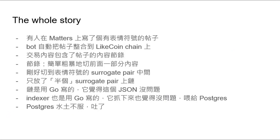所以Postgres就說這個不是一個合法的JSON。整個故事是這樣的：首先有人在Metas上面寫了個帖子，有一個表情符號，然後不是很清楚是有bot還是Metas自己的功能，它會把這些帖子自動整合到Litecoin chain上面。然後這個內容就包括了帖子的一些揭露，就簡單粗暴的把前面50或者100個character切進去作為description，就剛好切到那個表情符號中間，所以就放了半個。